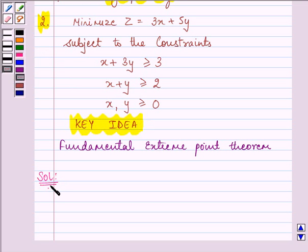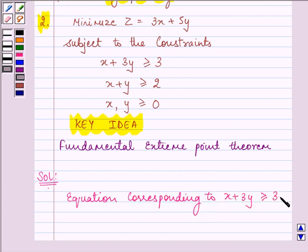First of all, we need to write down the equation corresponding to x plus 3y is greater than or equal to 3, and that is x plus 3y equals 3.